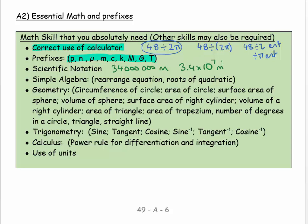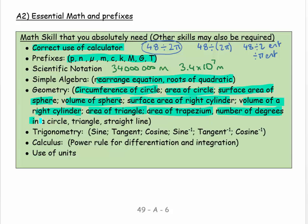Simple algebra—rearranging equations, finding roots of quadratics—they're very common and very useful. Geometry: circumference of a circle, area of a circle, surface area of a sphere, volume of a sphere, surface area of a right cylinder, volume of a right cylinder, area of a triangle, area of a trapezoid, number of degrees in a circle, triangle, and along a straight line. These are things that most physicists and engineers just assume that you know.